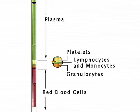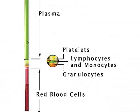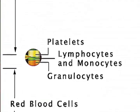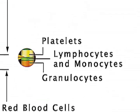The cell layering results from density gradients formed during high-speed centrifugation of the blood. Nine primary hematology values, including the platelet count, are derived.